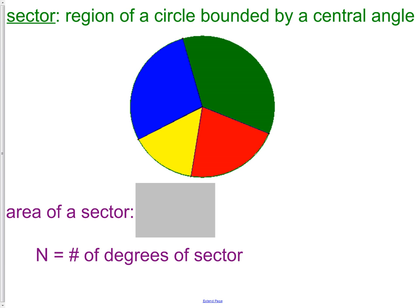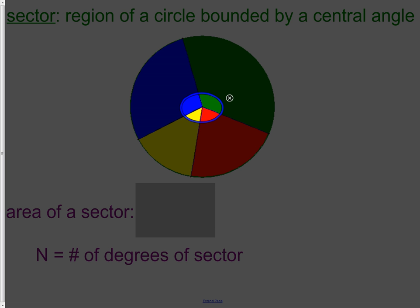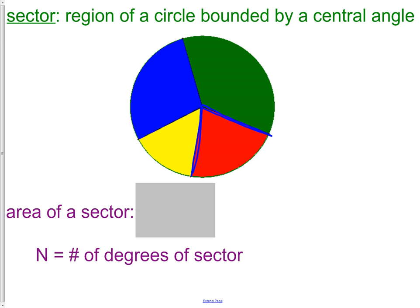The first thing we need to be able to do is calculate the area of a sector. A sector is a region of a circle bounded by a central angle. If you've ever played Trivial Pursuit, or seen a wheel, or one of those big pieces of cheese that comes in a circle — if you cut out a little triangle using the center, you actually have a sector. The red, blue, yellow, and green on the screen are all sectors. They could be different sizes, but they're all based off of the center of the circle, created by an angle that goes through the center.